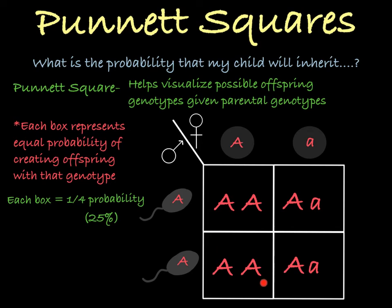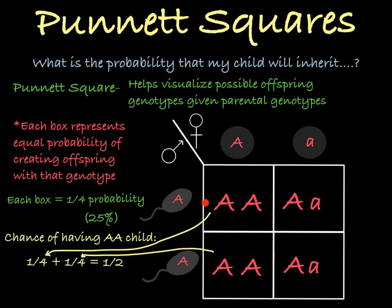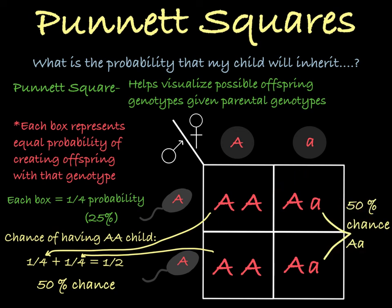Where you see the same genotype, you can add these probabilities together to get the overall probability of having a child with that genotype. So in this case, these parents have two of four boxes with the big A, big A genotype, so they have a 1/2 probability or 50% chance of having a child with the big A, big A genotype. The same logic applies to the big A, little a genotype, which means they have a 50% chance of having a heterozygous child.